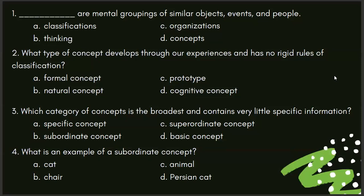A little bit of review. Blank are mental groupings of similar objects, events, and people — that would be D, concepts. Number two: what type of concept develops through our experiences and has no rigid rules of classification? B, natural concept. Number three: which category of concepts is the broadest and contains very little specific information? C, superordinate concept. Number four: what is an example of a subordinate concept? D, Persian cat.